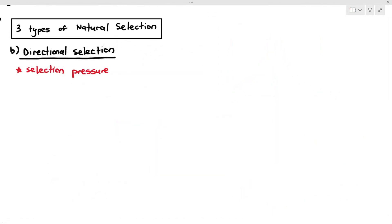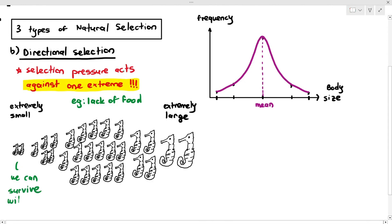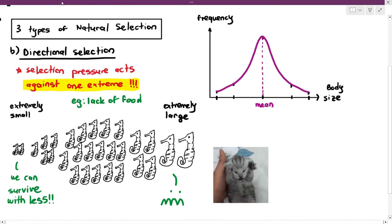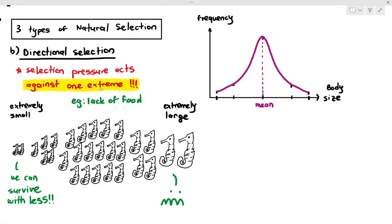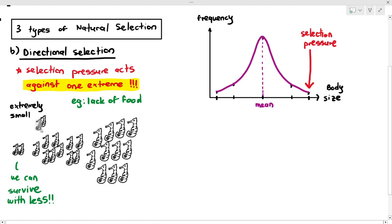The second type is directional selection, which occurs when the selection pressure acts against one extreme. In this example, the selection pressure is a lack of food. When there is a lack of food, the small-sized ones can survive with very little food, but the extremely large ones cannot because they have a greater demand for food. So the extremely large ones die off. The selection pressure acts against only one extreme, causing most of the large ones to die off, with some average-sized ones dying as well.